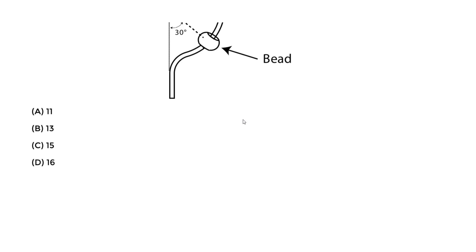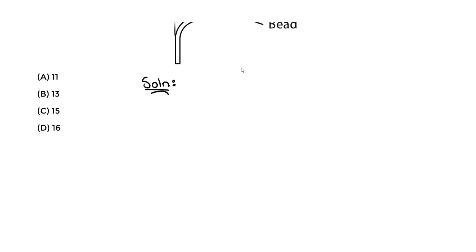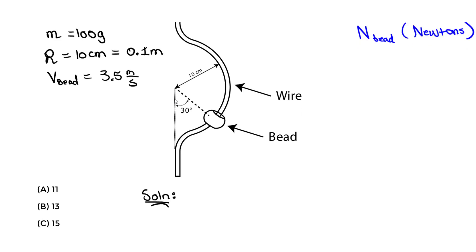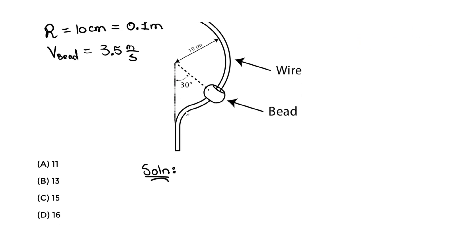For this example, we know we're dealing with the curvilinear coordinate system because we have curvilinear motion. The bead is still along that curved path at the position shown. So we have to use the curvilinear coordinate system — we cannot use the regular x, y coordinate system.